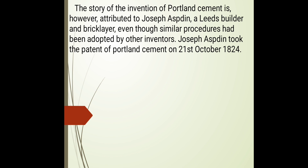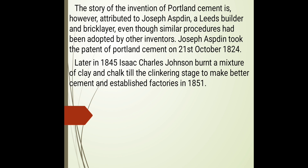Now we use Portland cement, which is named after Portland village in England where it was introduced. It was invented by Joseph Aspdin, who introduced Portland cement for builders and bricklayers. Even though similar products were adopted by other inventors, Joseph Aspdin took the patent for Portland cement on 21st October 1824. Later, in 1845, Sir Charles Johnson burnt a mixture of clay and chalk until the clinkering stage, forming a rounded hardened aggregate-type formation.